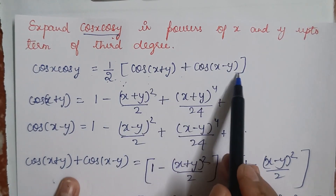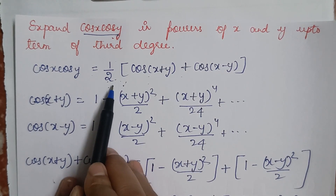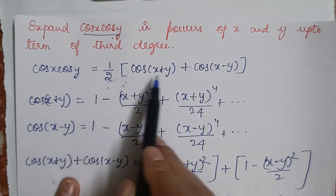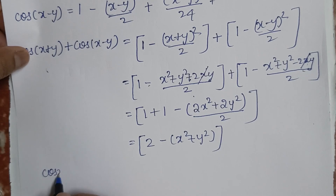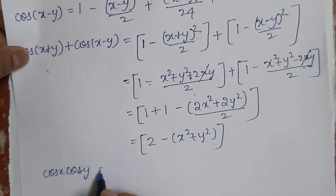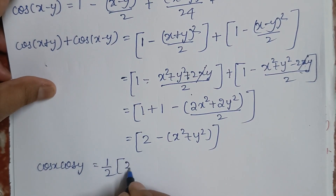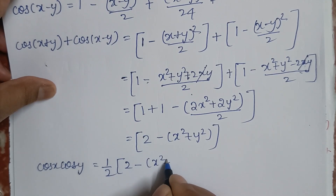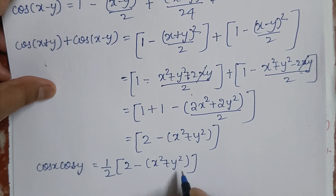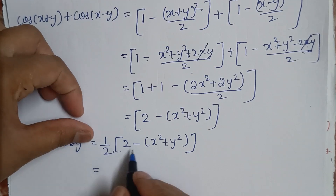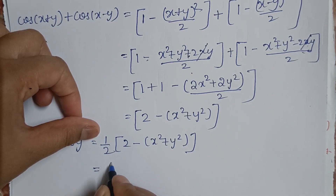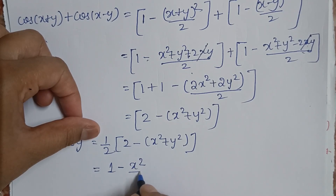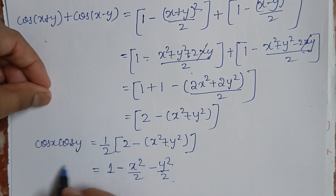Recall that cos x · cos y = ½ × [cos(x+y) + cos(x−y)]. Multiplying by ½: cos x · cos y = ½ × (2 − x² − y²) = 1 − x²/2 − y²/2.